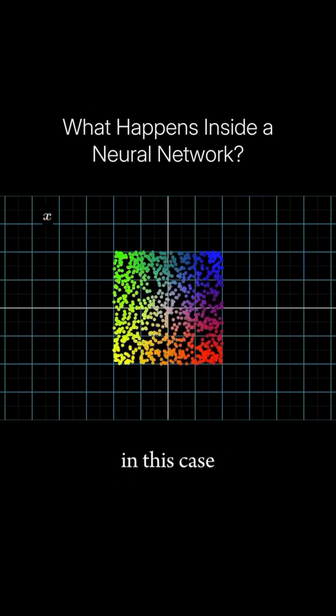So first, let's start with our input dataset. In this case, it's a uniformly distributed chunk of points in a square.